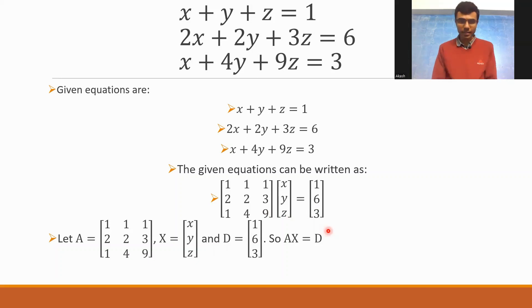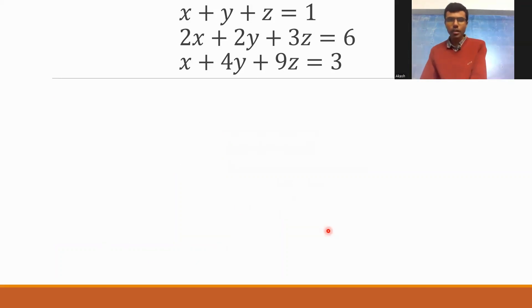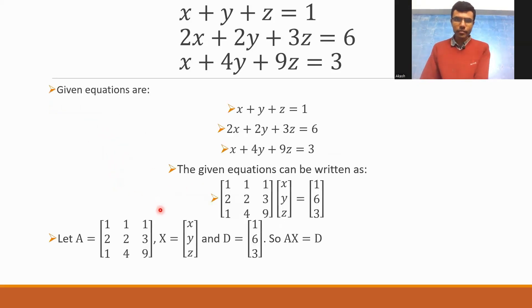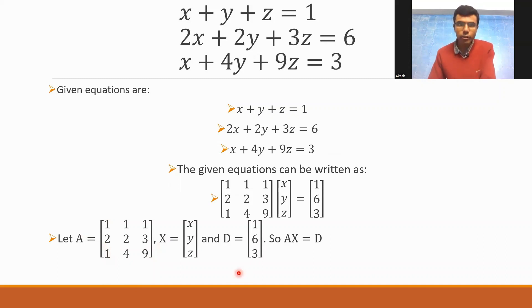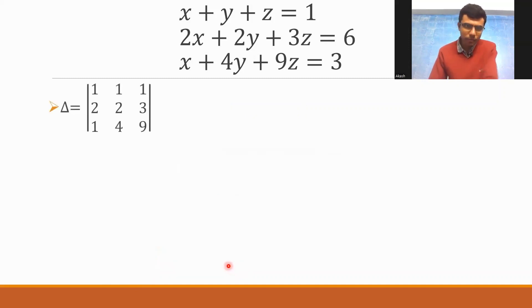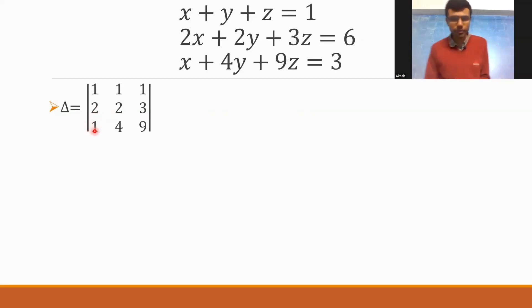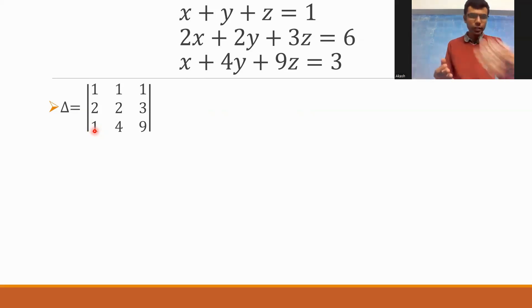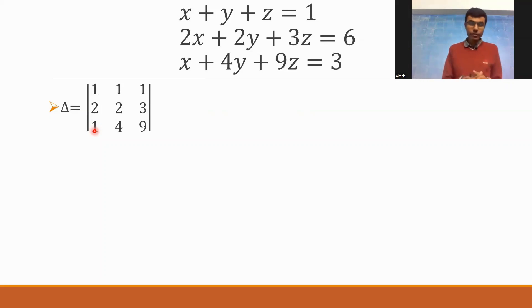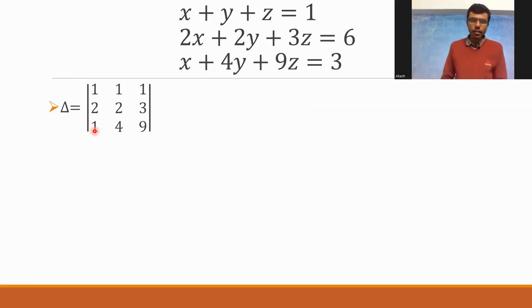Now I need to solve this matrix equation with the help of Cramer's rule. First, I'm going to find out delta — delta is nothing but the determinant of A. In case you are already familiar with how to find the determinant of a matrix, you can go a bit faster and increase the speed of this video. If not, I'm going to explain this first determinant in a detailed manner, and then the other determinants will go a bit faster.